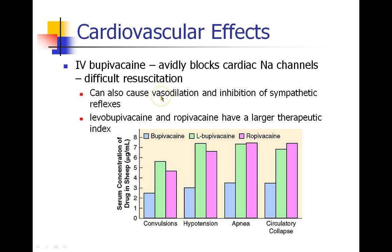Bupivacaine can also cause vasodilation, inhibit sympathetic reflexes, and this makes patients very difficult to resuscitate. Levobupivacaine, which is an isomer of bupivacaine, is less cardiotoxic, and ropivacaine is also considered to be less cardiotoxic. This chart shows bupivacaine compared with levobupivacaine and ropivacaine, showing what concentration you need for convulsions, hypotension, apnea, and circulatory collapse — and bupivacaine causes these complications at a much lower serum concentration.